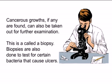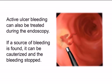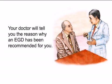Cancerous growths, if any are found, can also be taken out for further examination. This is called a biopsy. Biopsies are also done to test for certain bacteria that cause ulcers. Active ulcer bleeding can also be treated during the endoscopy. If a source of bleeding is found, it can be cauterized and the bleeding stopped. Your doctor will tell you the reason why an EGD has been recommended for you.